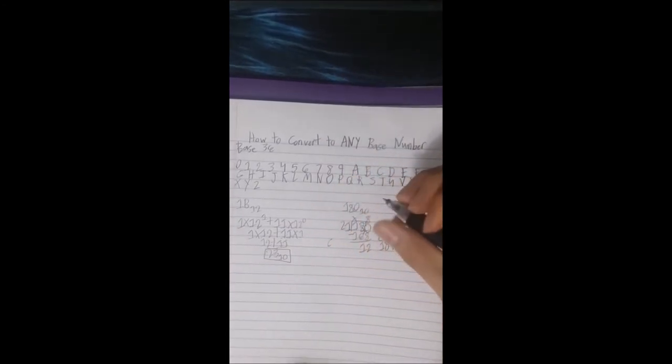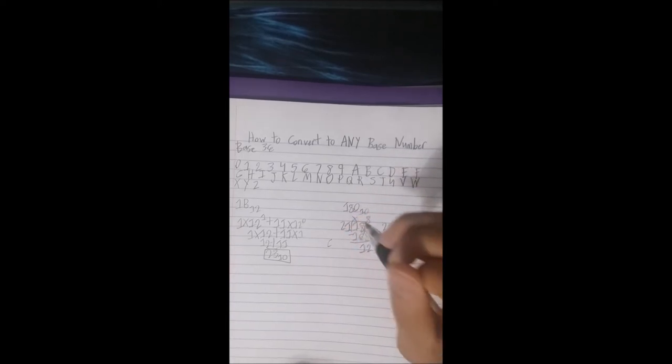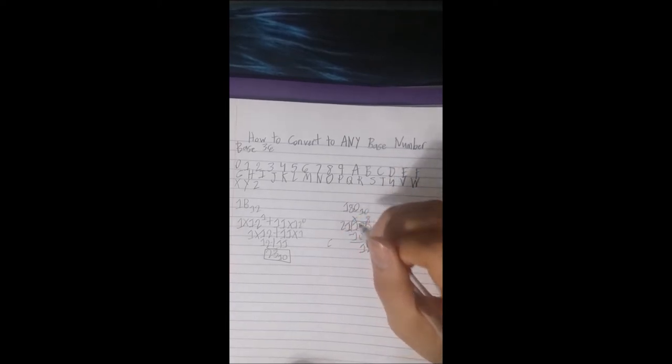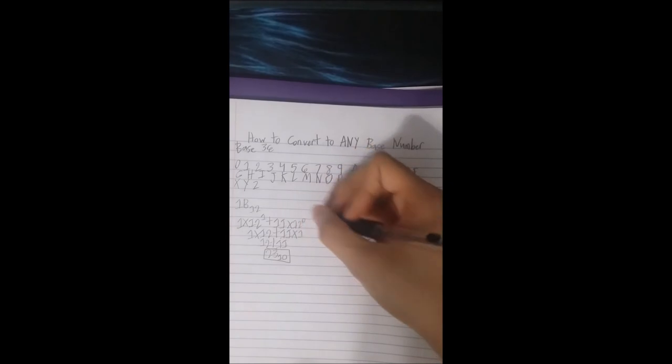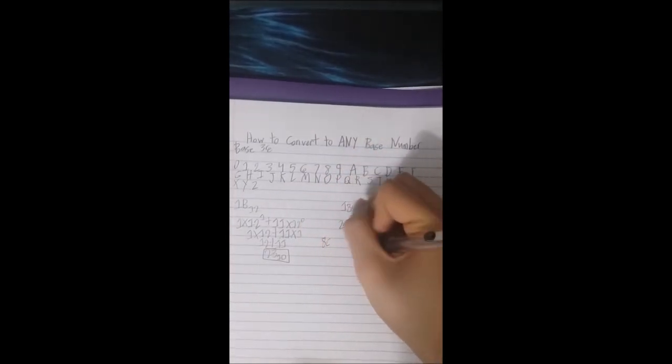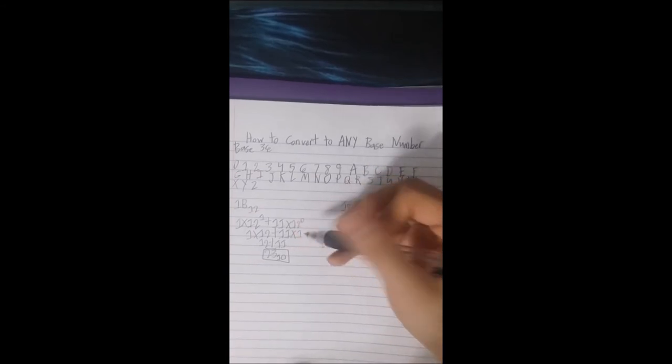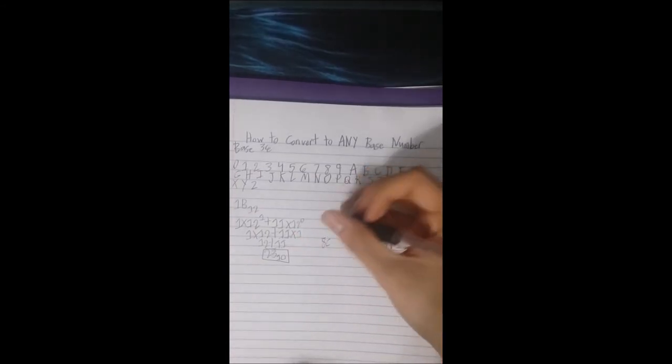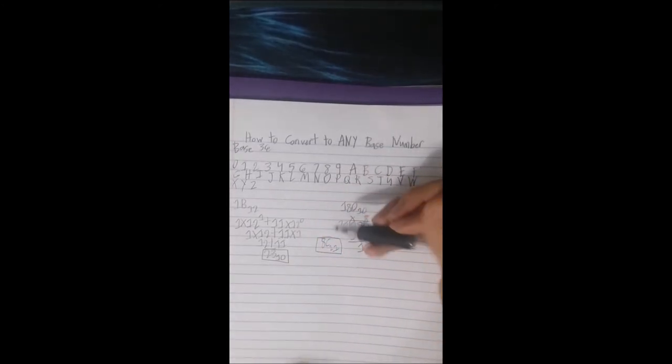Your remainder goes first then your product last. If you could divide this again, you could divide it. Like if it's higher than 21 or exactly 21, you could divide it again. If it's below the base number, then there's nothing else you could do for the product. You put your remainder first then your product last. And we know that C is 12 then 8. So the remainder always goes to the last then you keep adding the remainders after that. And that's how you convert to other base numbers.